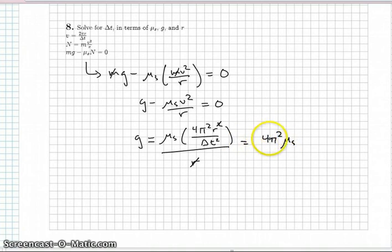It's a good form to put the numbers and constants first. And delta t squared is in the denominator. Okay, now it's not too bad. I just move the delta t squared up, move the g down.